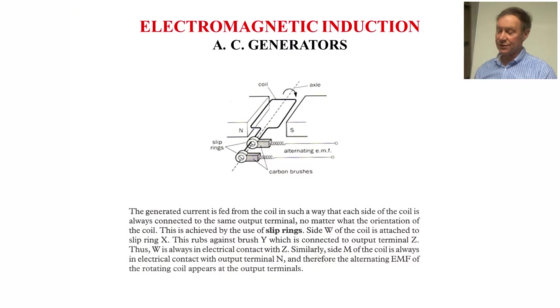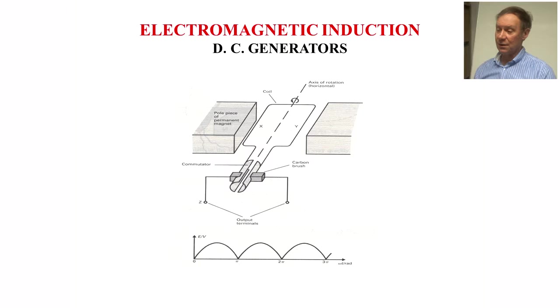AC generators. Here we have what we call slip rings at the end of the wires of the coil, and the magnet is shown there north and south, and the coil rotates in a clockwise motion as shown. Alternating current comes off to the right there. The generated current is fed from the coil in such a way that each side of the coil is always connected to the same output terminal no matter what the orientation of the coil. This is achieved by slip rings. Side W of the coil is attached to slip ring X as shown. Similarly, side M of the coil is also in lateral contact with the output terminal, and therefore the AC appears at the output terminals.